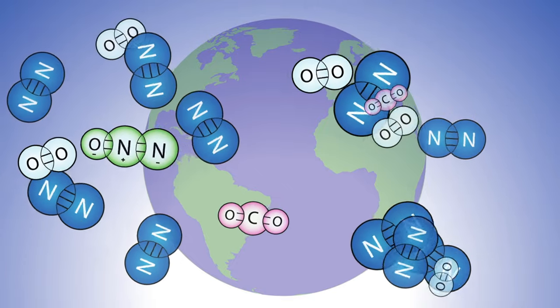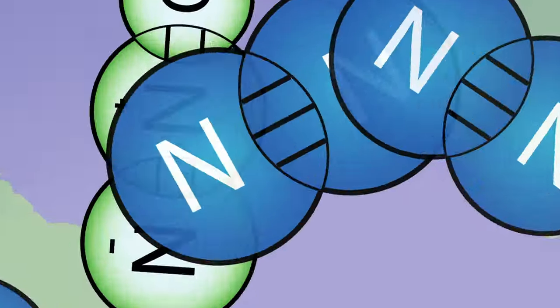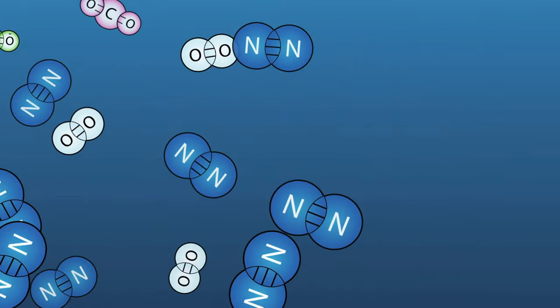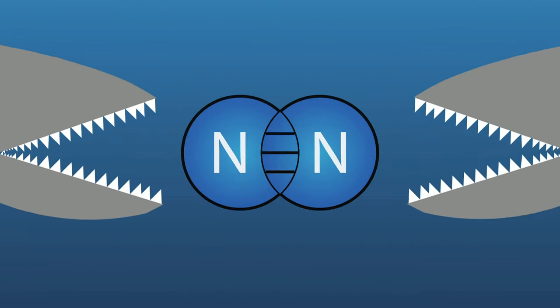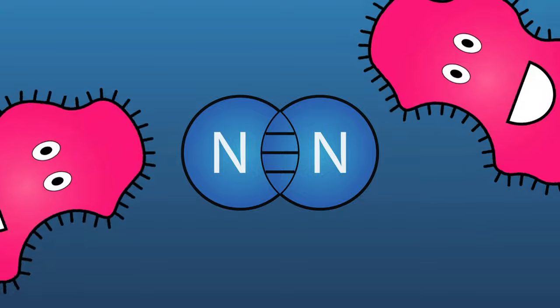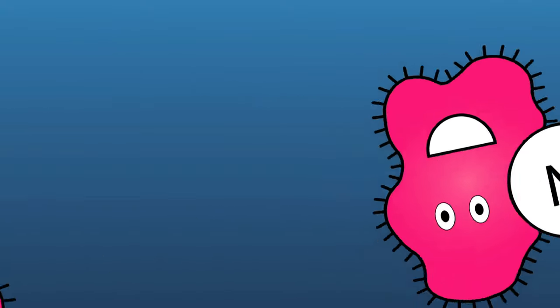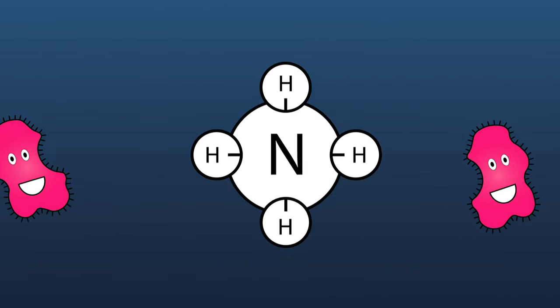Most nitrogen exists as nitrogen gas in our atmosphere, but it can also be found dissolved in the ocean. For most organisms, the triple bond in nitrogen gas is hard to break, but not for certain bacteria which can break the bond and add hydrogen to create ammonium.